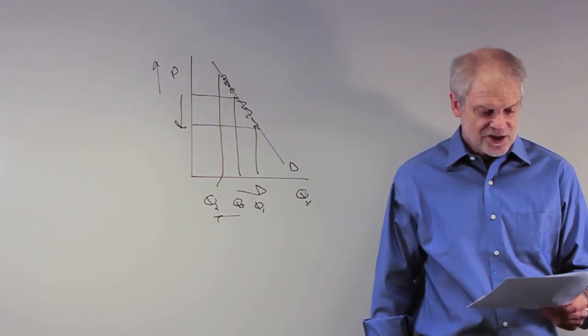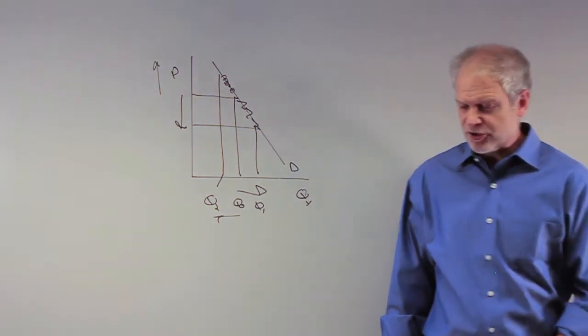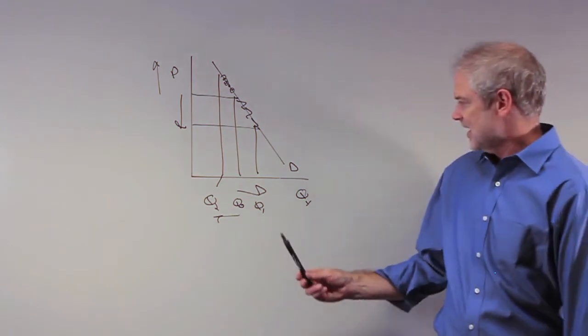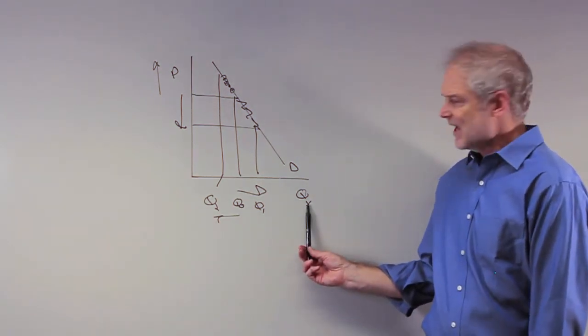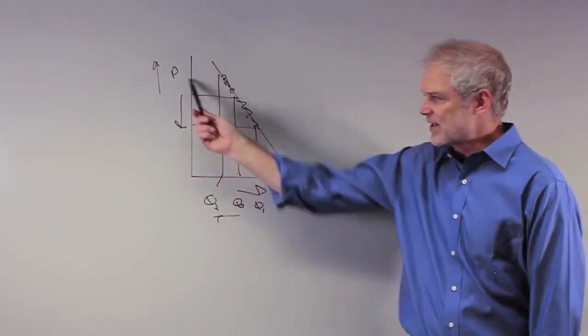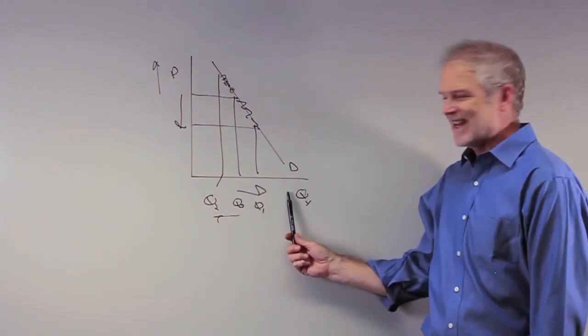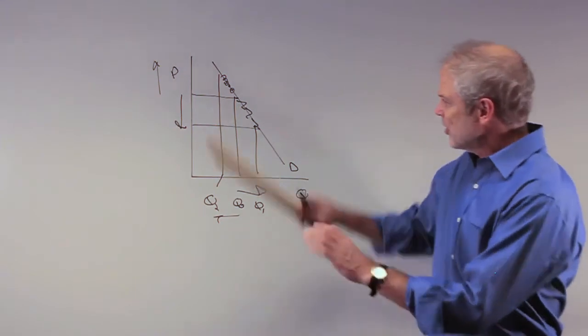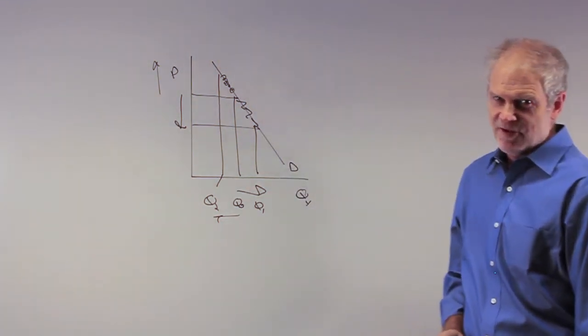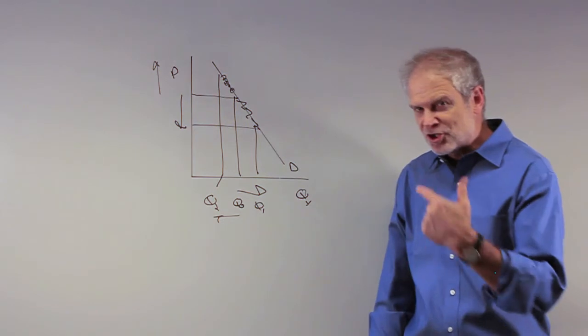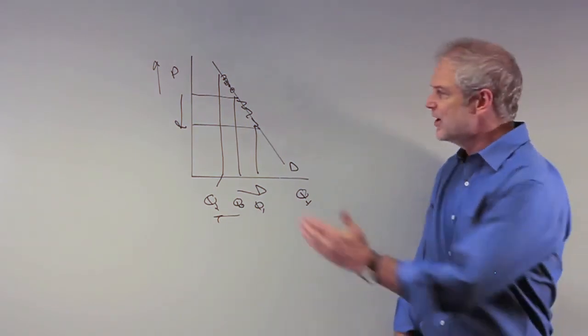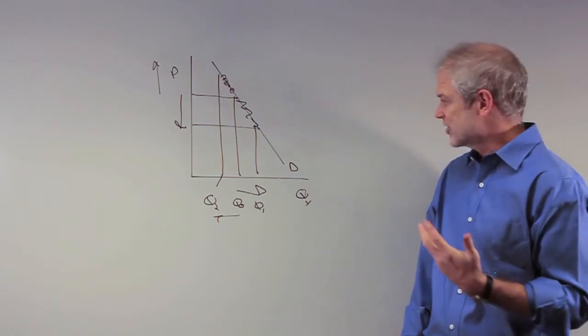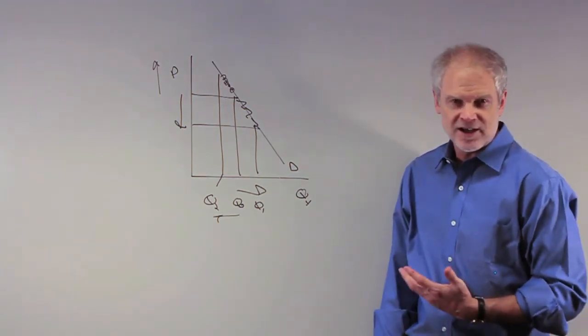Last one, option D: a change in the price of a related good or service. Let's say this is hot dogs and the demand curve for hot dogs. If I increase the price of hamburgers, and those two are substitutes, you'd see an increase in demand for hot dogs. So if I change the price of a related good, it affects this curve. Related goods means substitutes and complements.